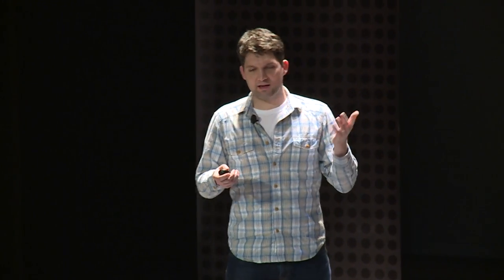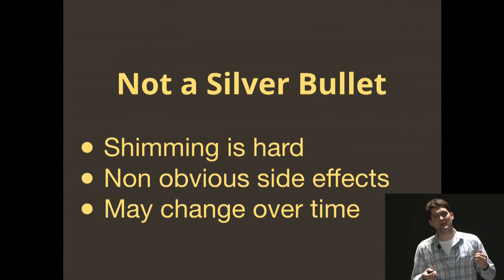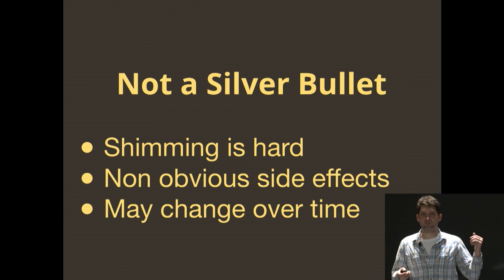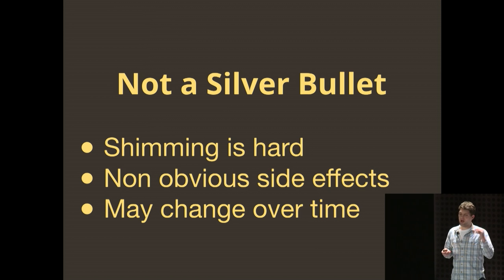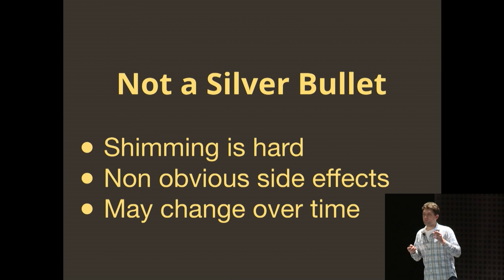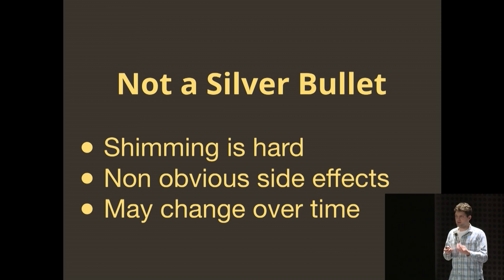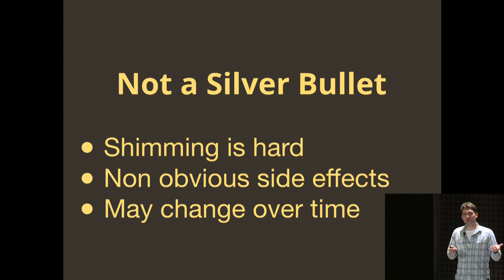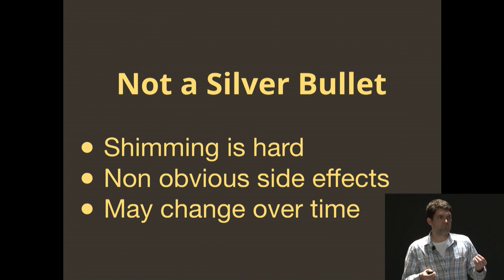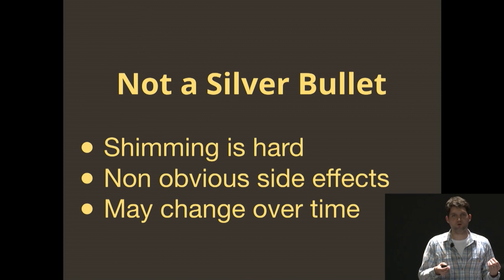There are no silver bullets — shimming is hard. ES5-shim is great; the authors are passionate about it, but even then mistakes slip through. If you have a shim service delivering shims, there are all kinds of issues there as well. Shimming is not guaranteed to be correct or free of future patches. There are also non-obvious side effects. The issue with array.contains was that the library was expecting it to be enumerable, but the native array.contains is non-enumerable. When you're shimming, you're usually shimming for environments that can't set enumerability in the first place — that's a non-obvious side effect that can bite you or applications that depend on that layer.